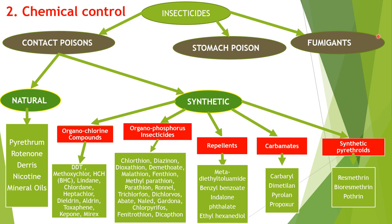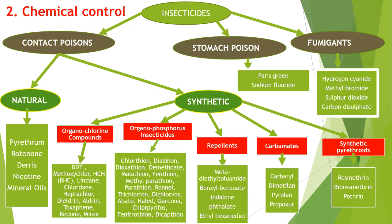Stomach poisons are those which, when ingested, cause the death of the insect. There are two members: Paris green (copper aceto arsenide) and sodium fluoride. The third group of insecticides is fumigants — those which give off vapors that have a lethal effect on insects. Fumigants include hydrogen cyanide, sulfur dioxide, and carbon disulfide.